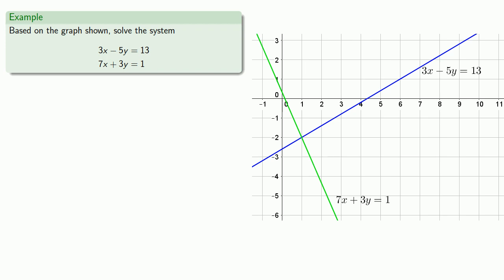So remember, if I have a point on the graph of 3x minus 5y equals 13, it automatically satisfies the equation 3x minus 5y equals 13. And likewise, any point on the graph of 7x plus 3y equals 1 satisfies that equation.